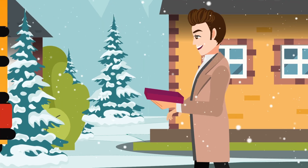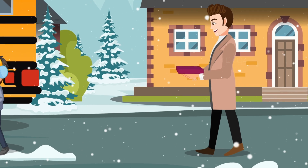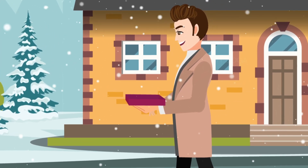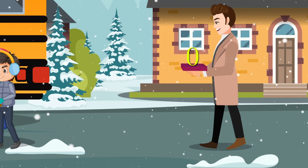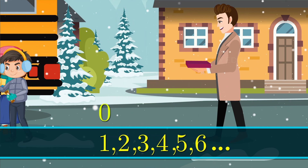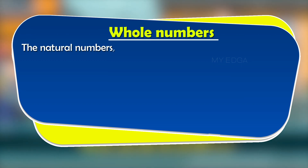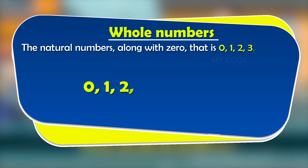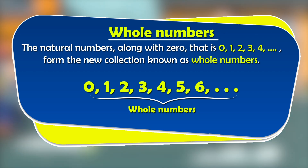The teacher reached the spot and the chocolates were equally distributed among twenty students. Now, how many chocolates are left with the teacher? He has no chocolates — that means zero chocolates. So we add the new digit zero as the predecessor for one. The natural numbers along with zero — that is, 0, 1, 2, 3, 4, and so on — form the new collection known as whole numbers.